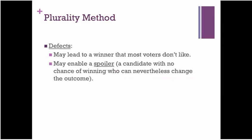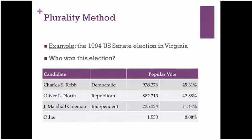Now, what's wrong with this method? Why would one not want to use this method? Well, we're pretty used to it in the US and maybe we're happy with it. Certainly an advantage is that it's very simple and easy to implement, and people don't have to understand anything about preference ballots. On the other hand, a defect is it may lead to a winner that most voters don't like, and it also may enable a spoiler. In that election we were just looking at, we might regard Coleman as some sort of a spoiler, depending on which other candidate he took votes away from. If he were out of the race, it might be that the race would come out a different way.